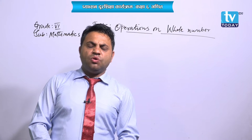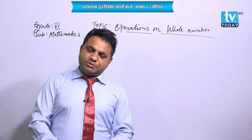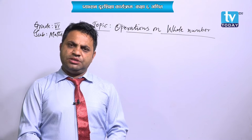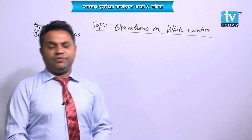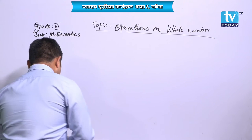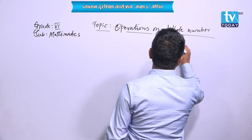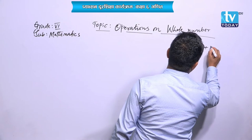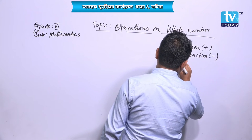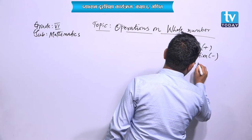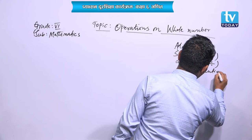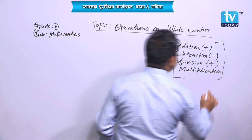Operations on whole numbers means addition, subtraction, division, and multiplication — these are the operations on whole numbers. In mathematics, these are the operations.